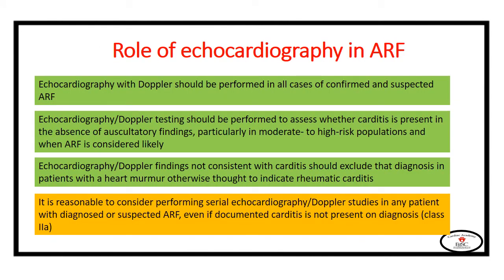Regarding the role of echocardiography in diagnosing acute rheumatic fever, the American Heart Association states that echocardiography should be performed in all cases of confirmed and suspected acute rheumatic fever. It is a class 1 indication to assess whether carditis is present when clinical findings are absent, especially in those from moderate to high risk populations. Absence of abnormalities consistent with carditis on echocardiography should exclude the diagnosis of rheumatic carditis. It is a class 2a indication to perform serial echocardiography in any patient with diagnosed or suspected acute rheumatic fever.